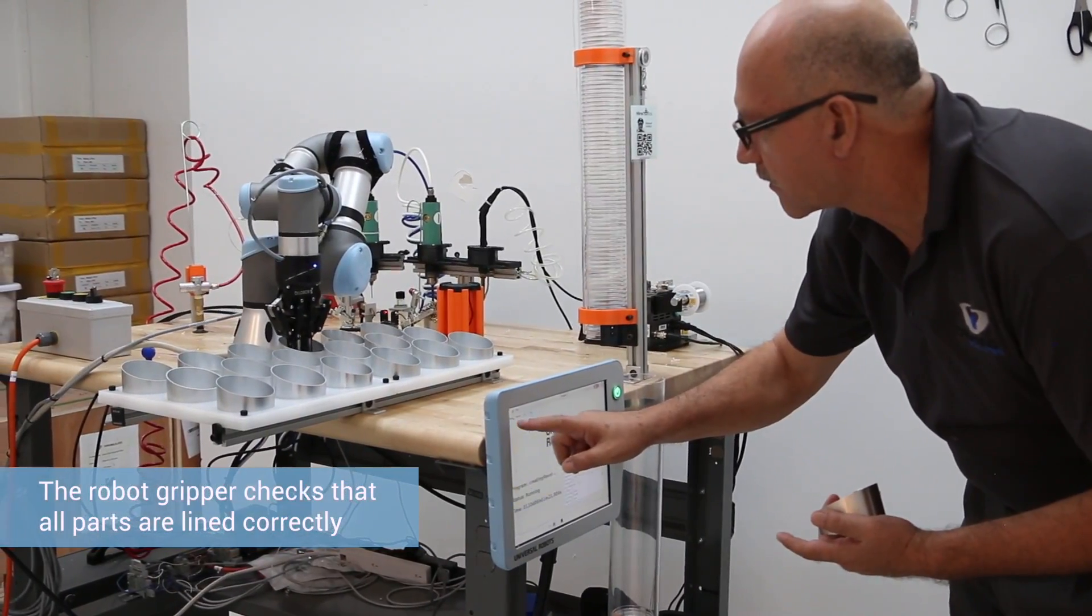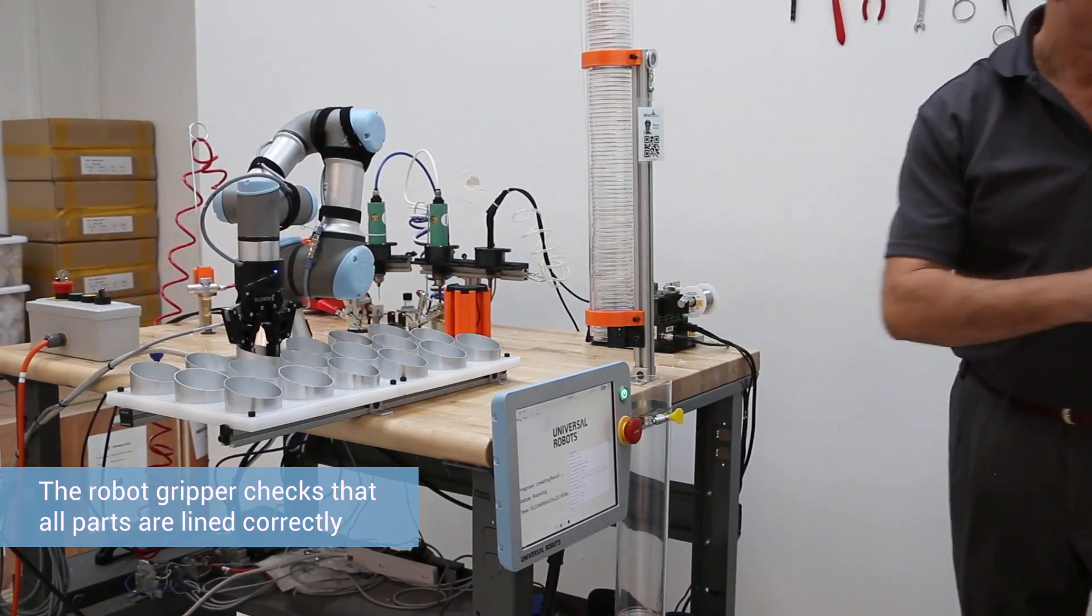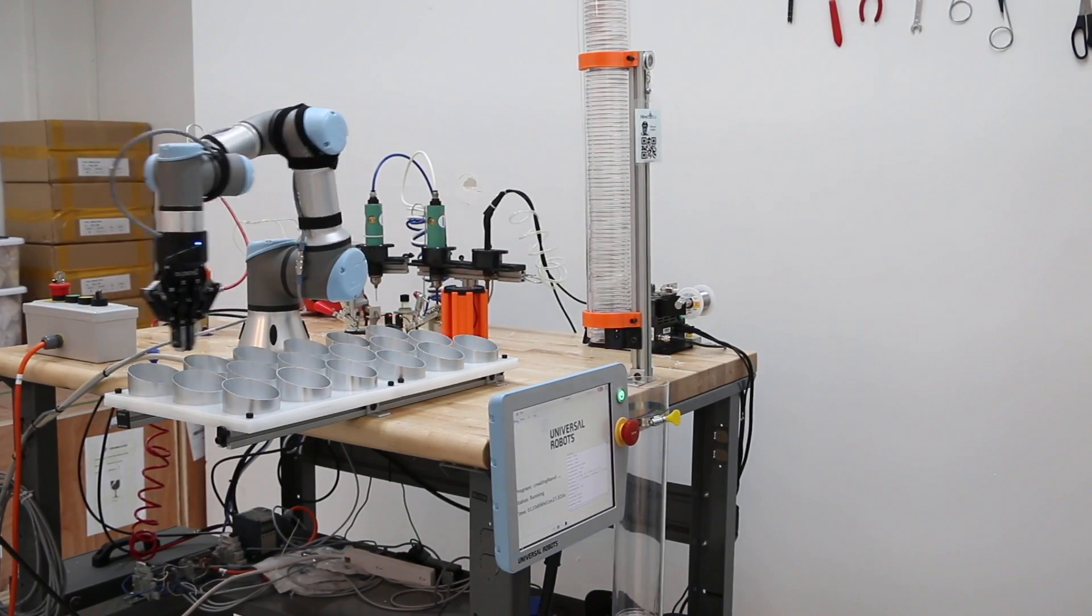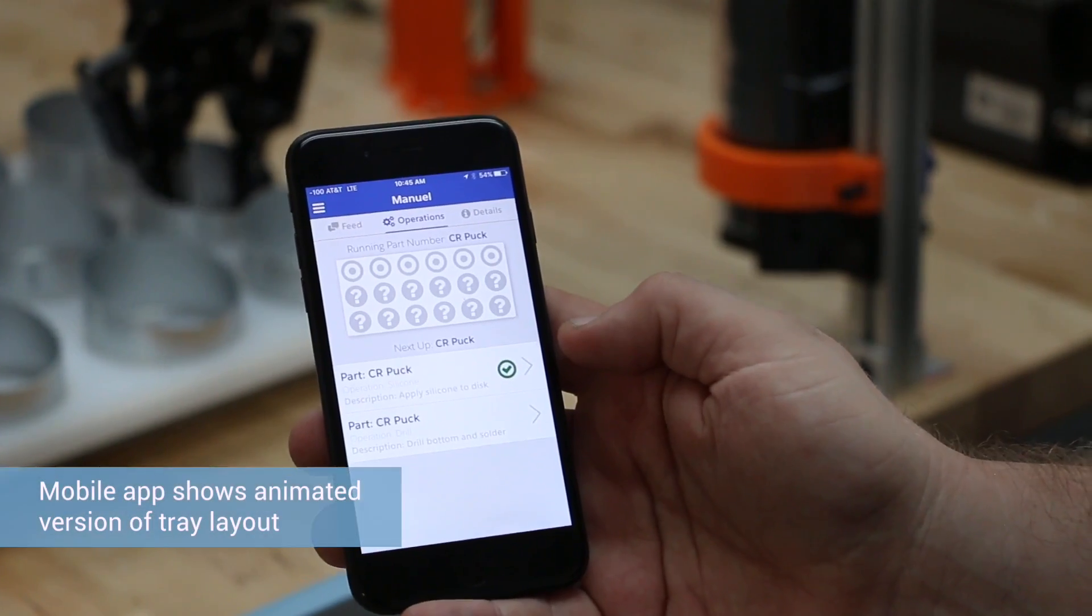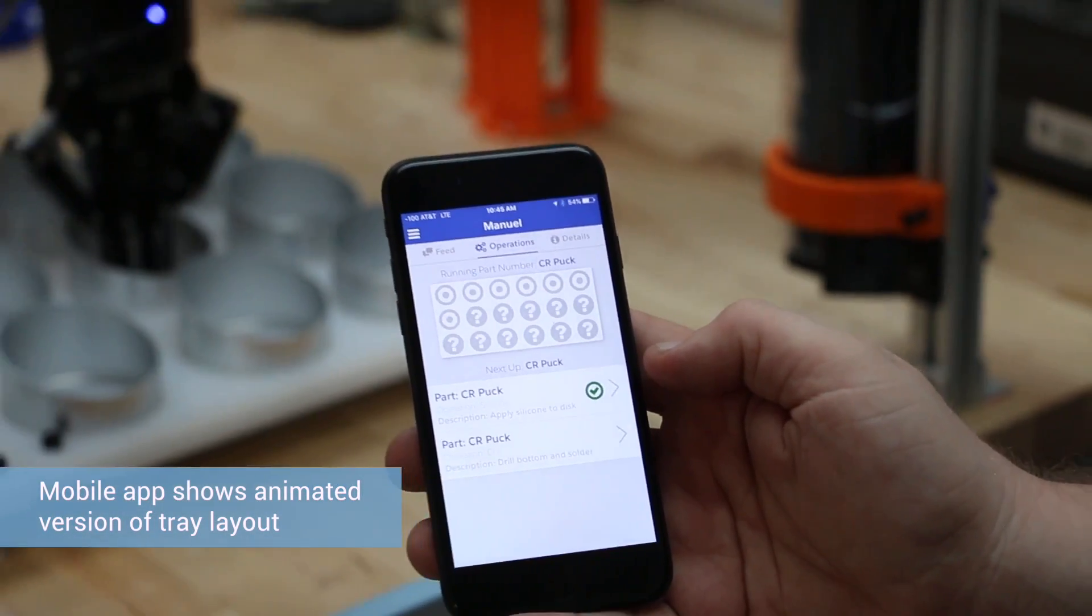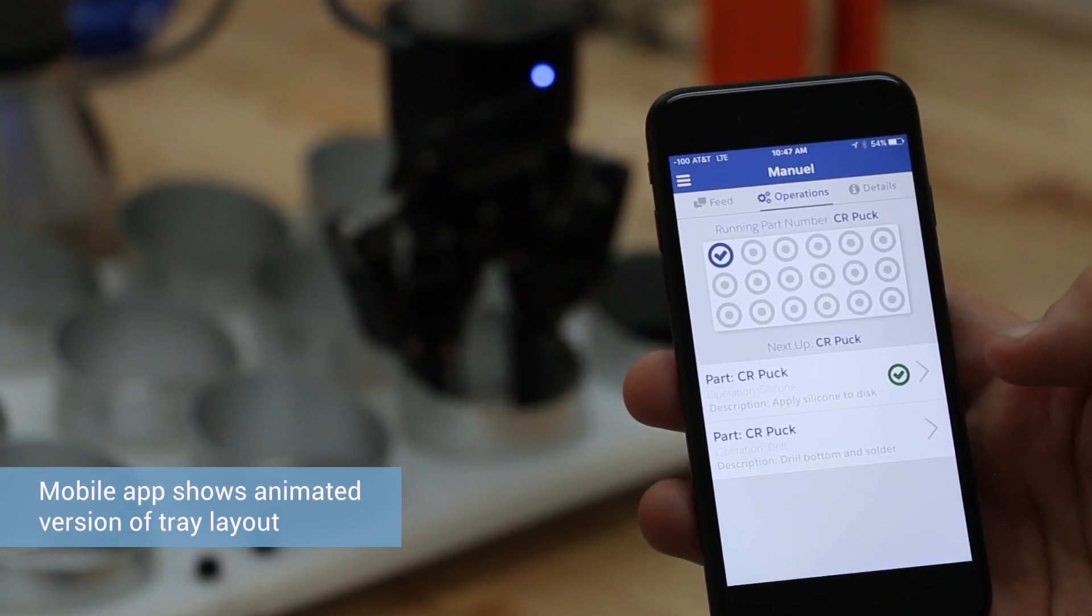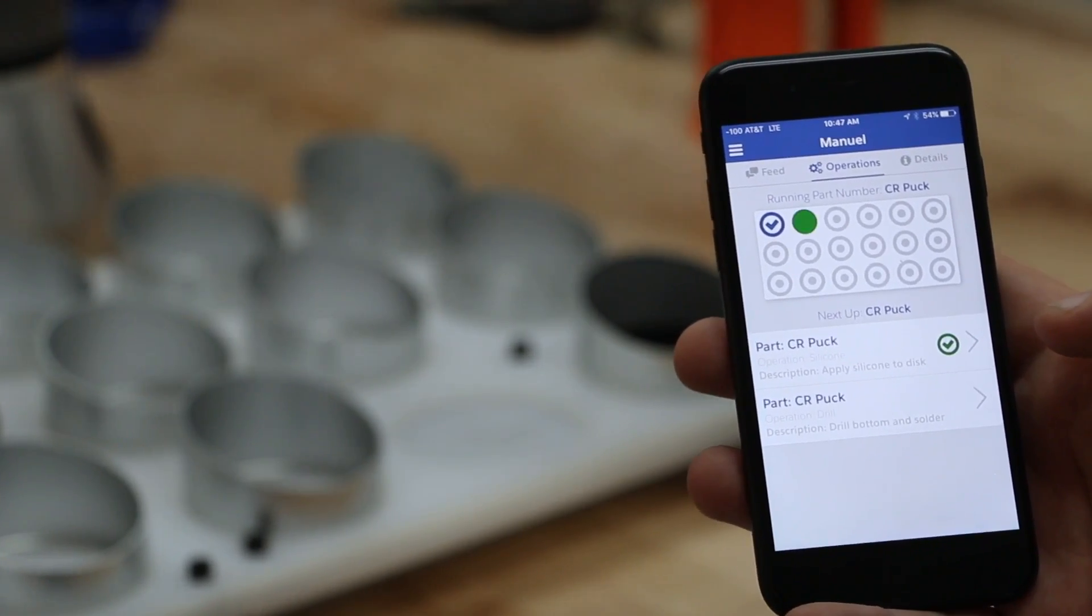The UR3 handles two different cycles. First, the robot checks that the aluminum housing parts are aligned correctly on a tray. Hyerbotics, a certified system integrator of Universal Robots, installed the UR3 and built a cloud-connected smartphone interface.